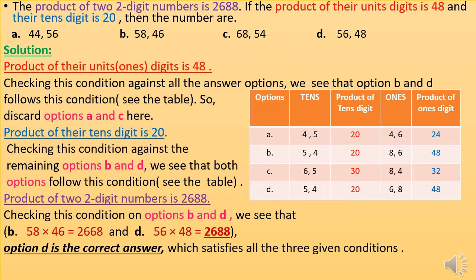Now look at the table. The first column shows options A, B, C, D. The second column shows the tens digits of the two numbers given in each option. The third column shows the product of those tens digits. The fourth column shows the ones digits of the two numbers, and the fifth column shows the product of those ones digits.